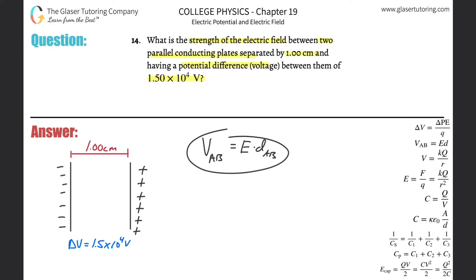So in other words, if I want to find the electric field strength, I need to divide out the distance. So in other words, the electric field strength between two points is going to be equal to the voltage between those two points divided by the distance between those two points.